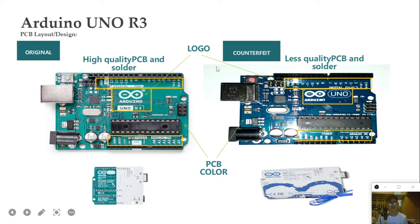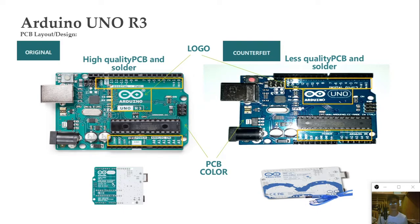For PCB quality, the original one has high quality PCB and solder, while the counterfeit has lower quality PCB and solder. You can also see the differences by color — the original one has a lighter ocean blue and the counterfeit one is a darker blue. This is how you can distinguish the difference between the original Arduino UNO R3 and the counterfeit Arduino UNO R3.